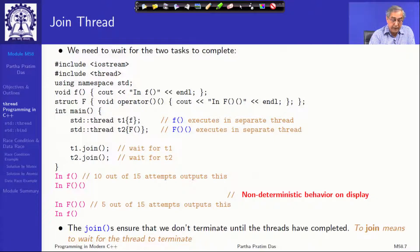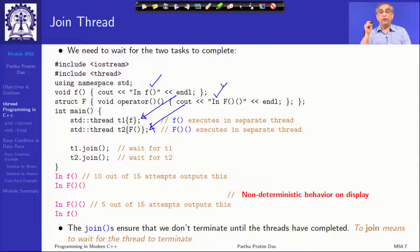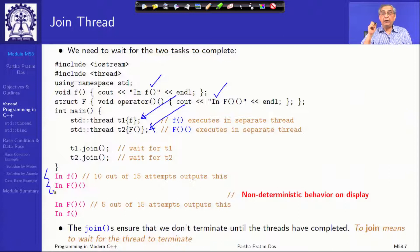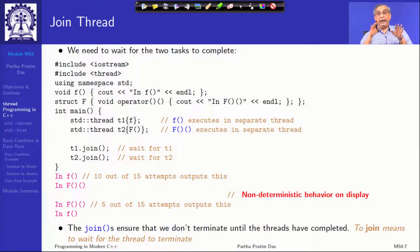These are concurrent executions happening at the same time. Even though T1 is constructed first and T2 next, it is not determined which order they will execute their cout statements. Running it multiple times, sometimes the function f executes first and sometimes the functor F executes first. This indeterminism in thread execution will always be present.